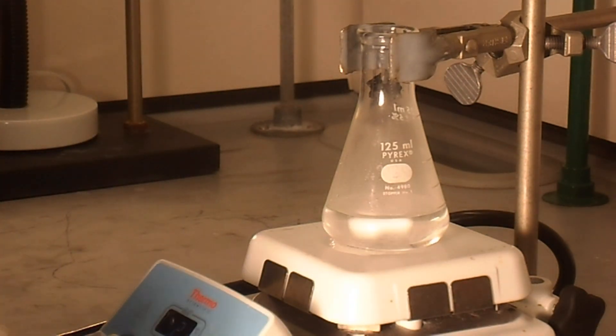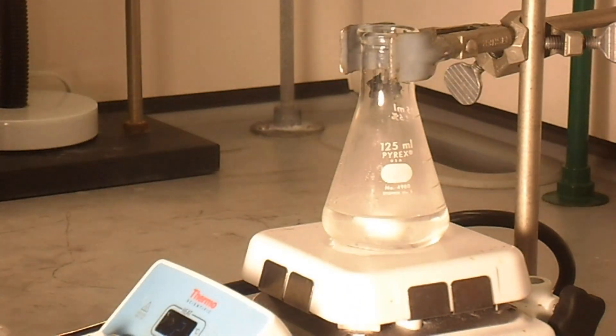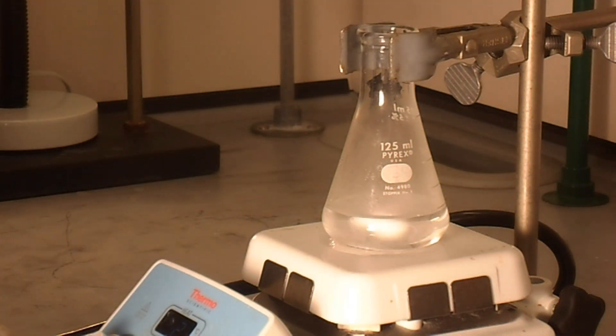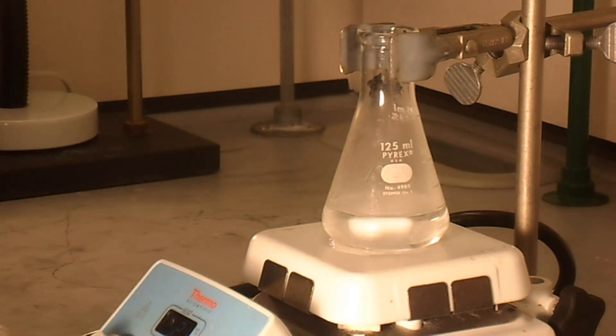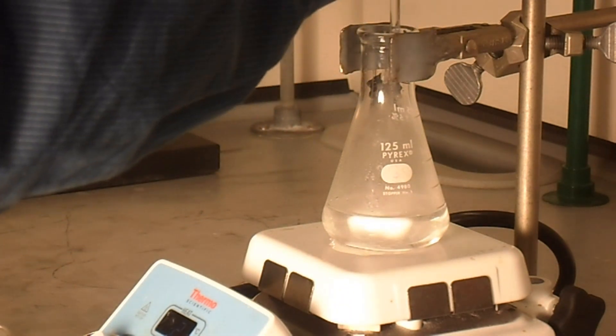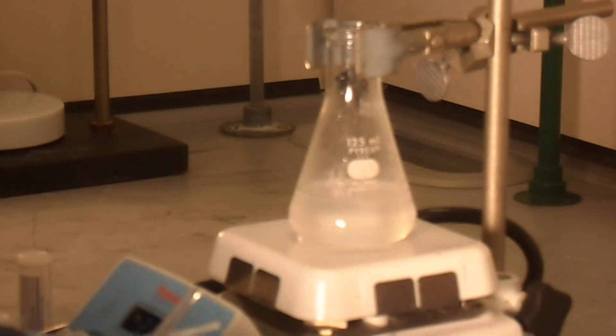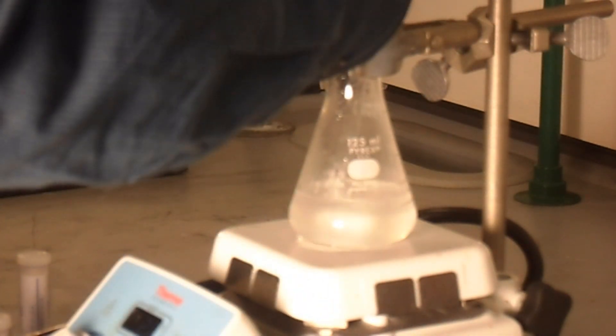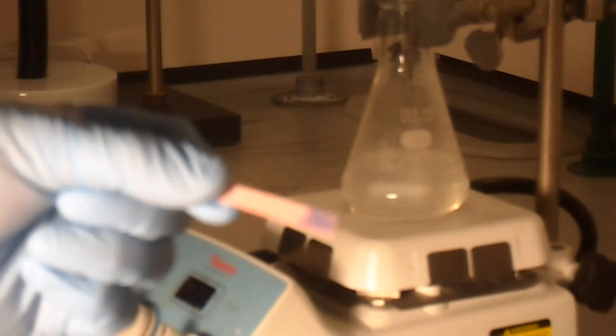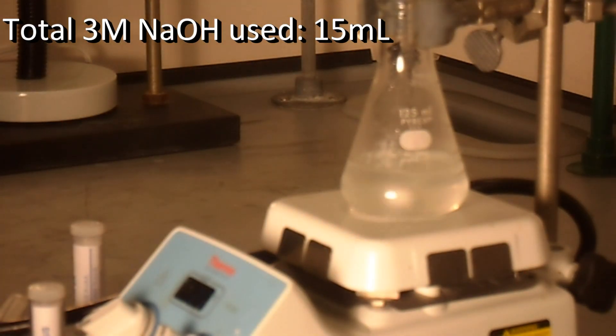So we can go ahead and move on to our 3 molar sodium hydroxide, which gets added 1 milliliter at a time until red litmus paper is basic. We have a clear test. There we go. So it's hard to see on the video, but basically the litmus paper has turned blue and we have used 15 milliliters of our hydroxide.